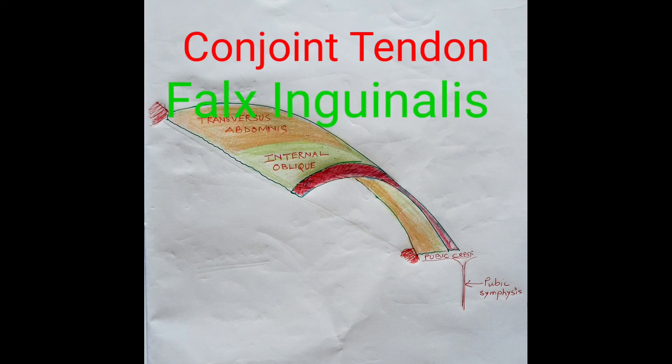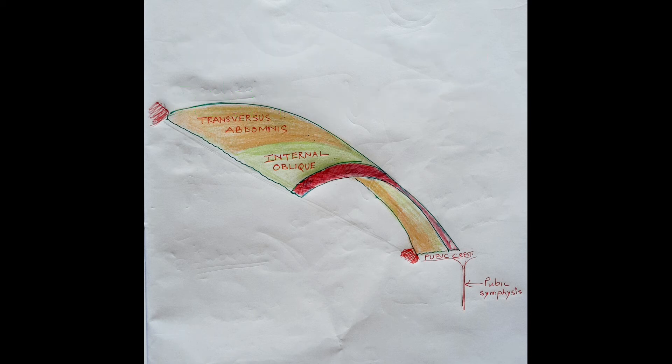The conjoint tendon, also called falx inguinalis, is formed by the fusion of the aponeurosis of the inguinal fibers of the internal oblique and transversus abdominis muscles.